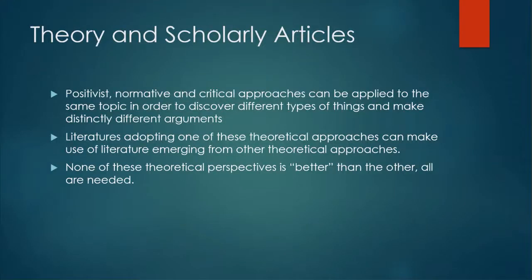What we see here is that positivist, normative, and critical approaches can be applied to the same topic in order to discover different types of things and make distinctly different kinds of arguments. Literatures adopting one theoretical approach can make use of literature from other theoretical approaches — the normative and critical studies could both draw on the initial positivist study, and the critical study might use the previously published normative study. None of these theoretical perspectives is better than the others; all are needed.